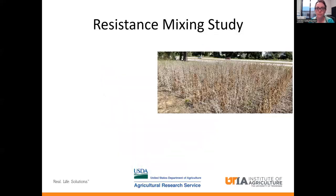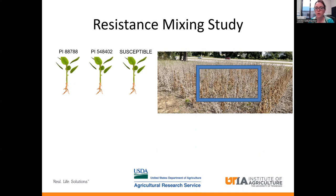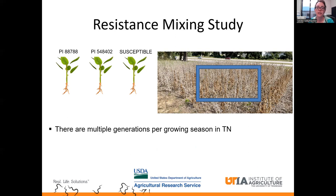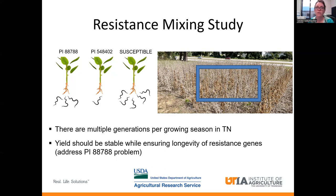That's exactly what we did. This is what it looked like in the Jackson location at the end of October last year. We have this mixed site of soybeans. Under the soil we have our 88788, our 548402 or Peking, and a susceptible. We know that there are multiple generations of soybean cyst nematode per growing season in Tennessee. So by the end of the growing season, we might see some reproduction on the 88788, very low reproduction on the 548402, and quite high reproduction on the susceptible variety. I believe that mixing these will stabilize our yield and also maintain the longevity of those resistance genes, helping us address the PI 88788 problem where it's losing its effectiveness.